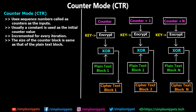The operation of Counter Mode is fairly simple. It operates on block ciphers, meaning it performs encryption and decryption block by block and not by stream. Instead of the IV which we've been using in the previous algorithm modes — Cipher Feedback, Output Feedback — in Counter Mode we have something which is known as a counter.